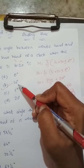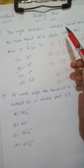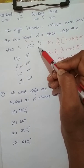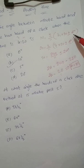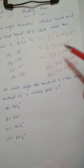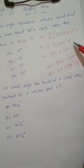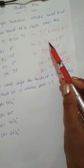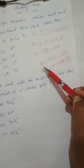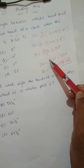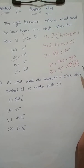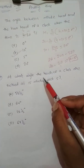So at 4:20, the angle between the minute hand and hour hand is 10 degrees. We can verify: M = 20, H1 = 4. So 20 = 2/11 × 4 × 30 ± 2A = 240/11 ± 2A. Multiplying both sides by 11: 220 = 240 ± 2A, so 2A = 20, A = 10 degrees confirmed.